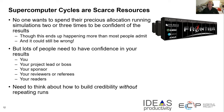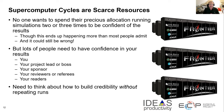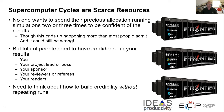When you think about running on a supercomputer, supercomputing allocations are valuable and scarce resources. No one wants to spend their precious allocations running simulations two or three times to be confident of the results. This happens more than most people will admit. And the problem is it could still be wrong — there may still be mistakes in the code. There are a lot of people who need to have confidence in your results: you, your boss, your sponsor, the reviewers of your papers, the readers of your papers. You need to think about how to build credibility for your code for all these people without having to repeat very expensive runs.